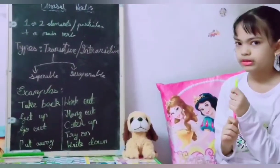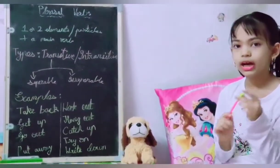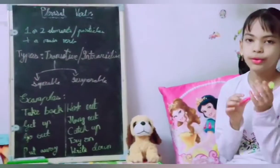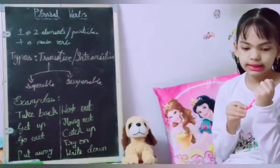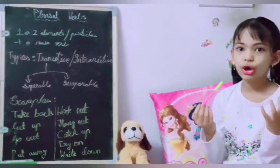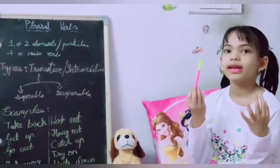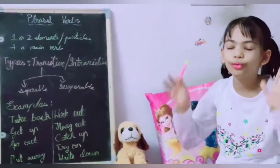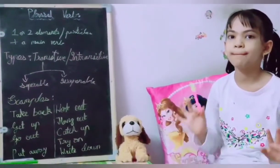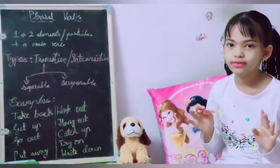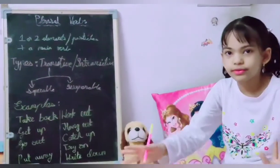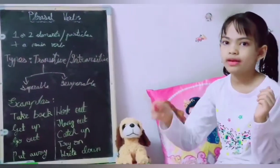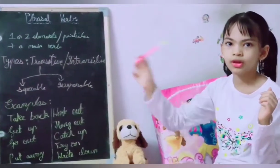And inseparable — there is a very important note. When the direct object is a pronoun like 'it,' 'her,' 'she,' or 'them,' it always needs to be placed within the phrasal verb. Like 'I put it on' — we can't say 'I put on it.'